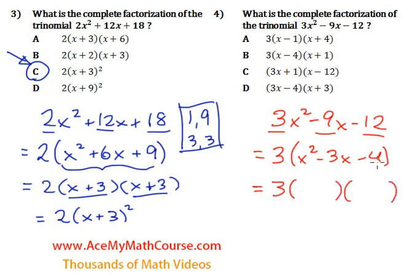Now, we're looking for... I can put an x here, another x there. And we're looking for two numbers that will multiply to negative 4 and add up to negative 3.